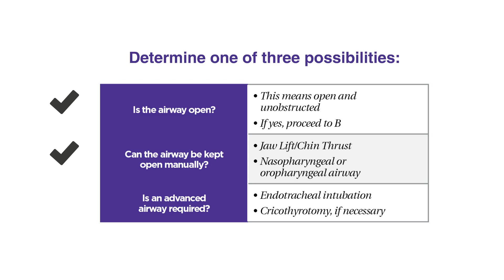Three: if an advanced airway is required, then use endotracheal intubation or cricothyroidotomy. Once an airway has been established and maintained, then move on to breathing.